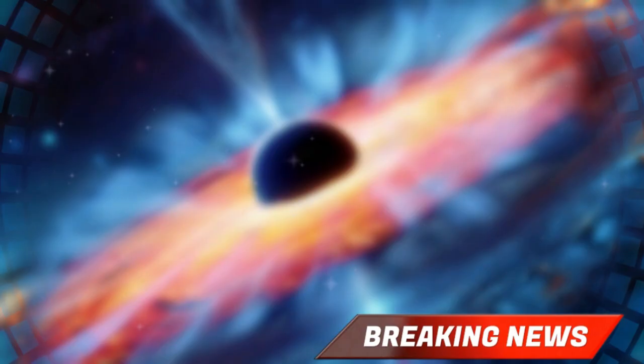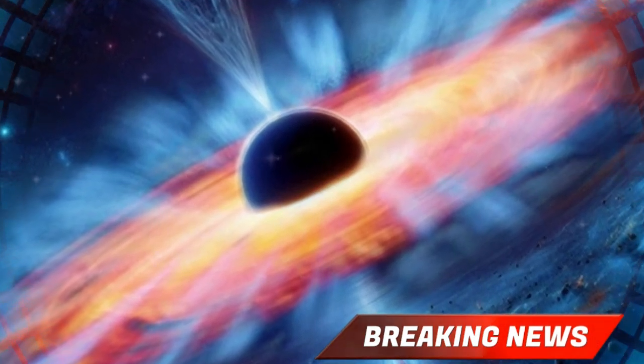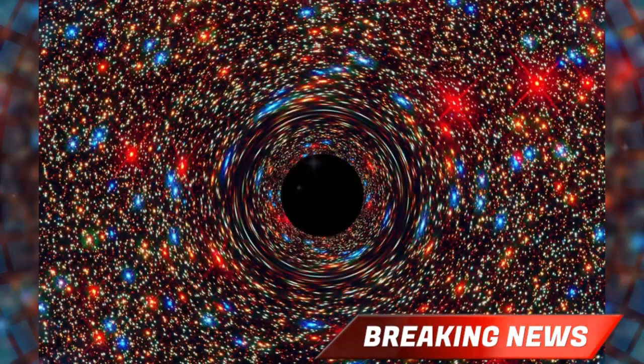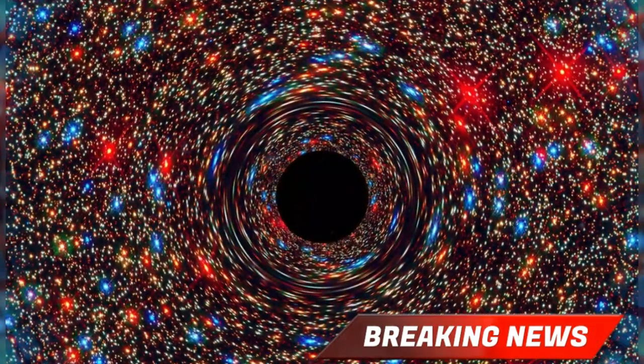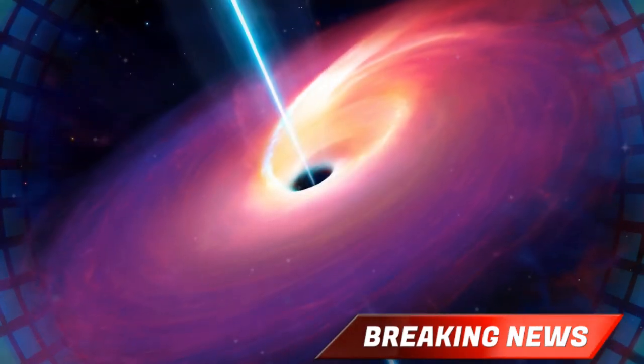Astronomers turned Chandra's gaze to an ancient black hole, known as RACS J0320-35, a cosmic beast born just 920 million years after the Big Bang. To put that in perspective, the universe is about 13.8 billion years old today. When this black hole was already fully formed, the cosmos was barely 1/15th of its current age.